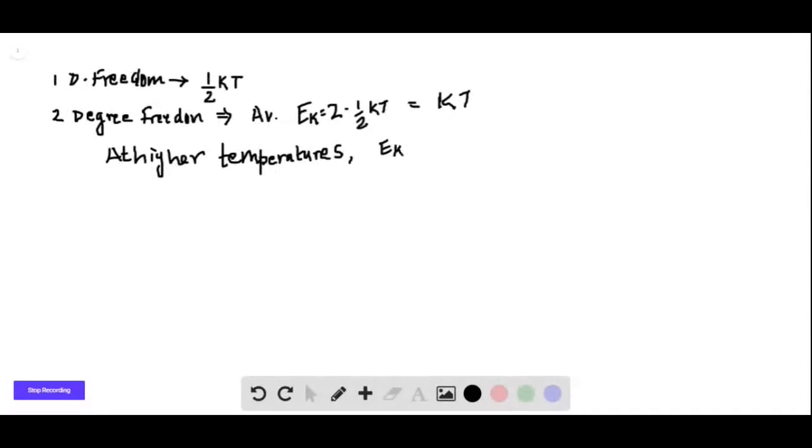At higher temperatures, average kinetic energy equals average potential energy. Therefore, total energy E equals Ek plus Ep, which gives me 2kT. Now Boltzmann's constant k can be written as R by Avogadro's number N.